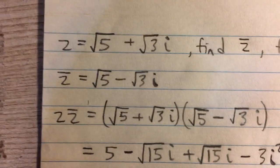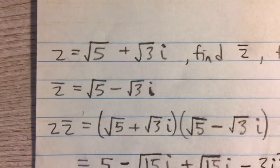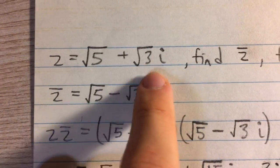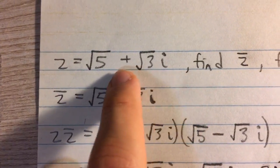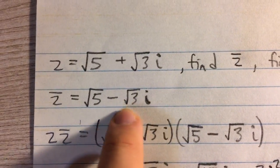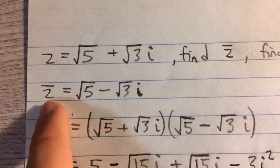So first off, to find the conjugate, all we have to do is switch the sign of the imaginary part, the part with i in it. So instead of plus root 3i, we have minus root 3i. That's our conjugate.